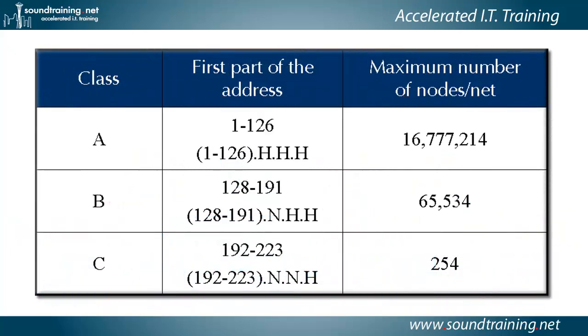Before we go any farther, in the early days of the internet, the address space was divided into five classes, three of which were used in commonly applied IP addresses: class A, B, and C.